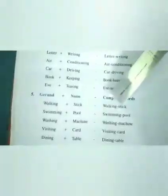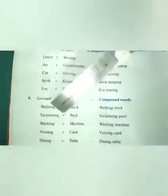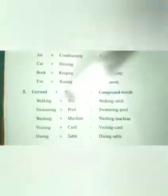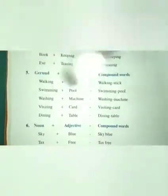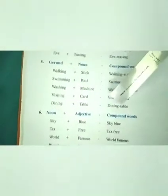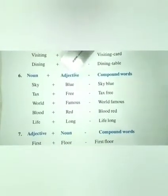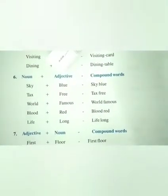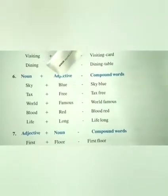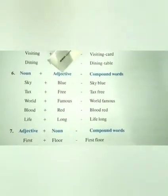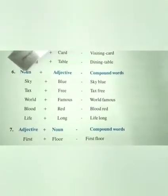Gerund plus noun compound words. Examples: 'walking' plus 'stick' gives 'walking stick'. 'Swimming' plus 'pool' gives 'swimming pool'. 'Washing' plus 'machine' gives 'washing machine'. 'Waiting' plus 'card' gives 'waiting card'. 'Dining' plus 'table' gives 'dining table'.